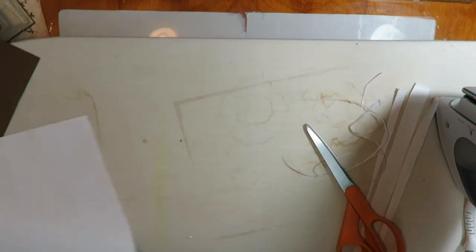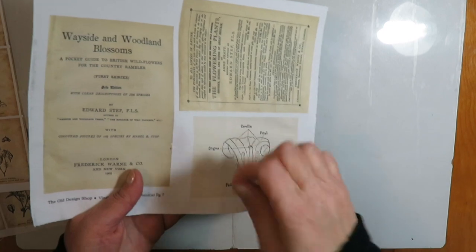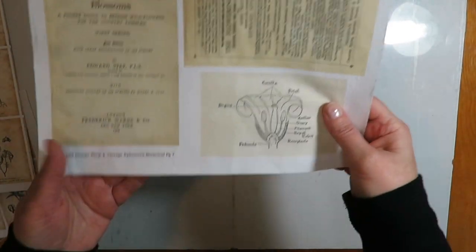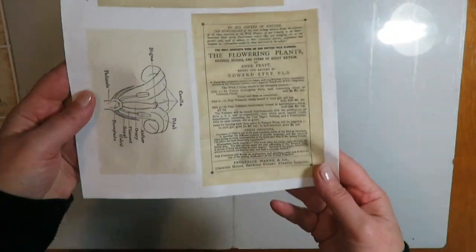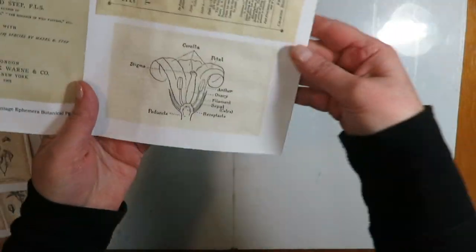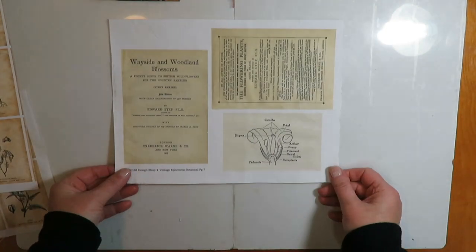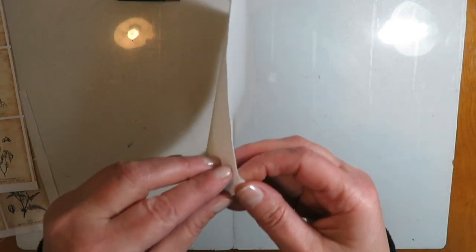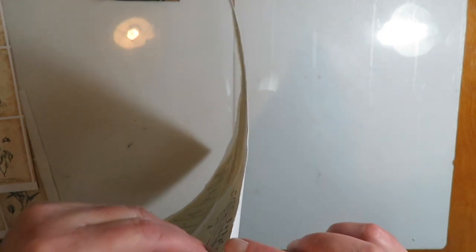Okay, I printed another page from the Old Design Shop. This is from the vintage ephemera botanical page seven because I'm going to use these in another project. So you just peel it off. I usually let it sit for a few minutes just to let all the ink dry, and then just peel it off from the back of the freezer paper.